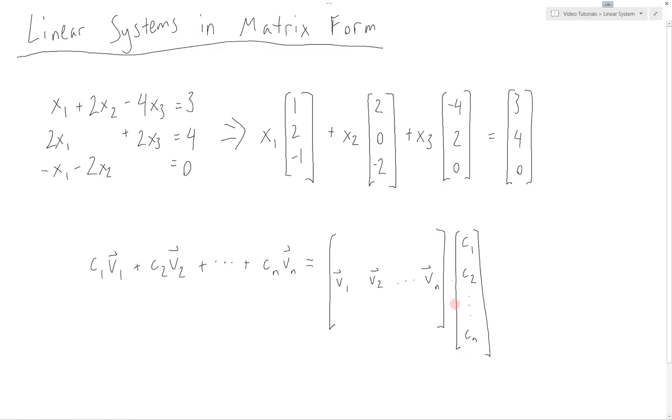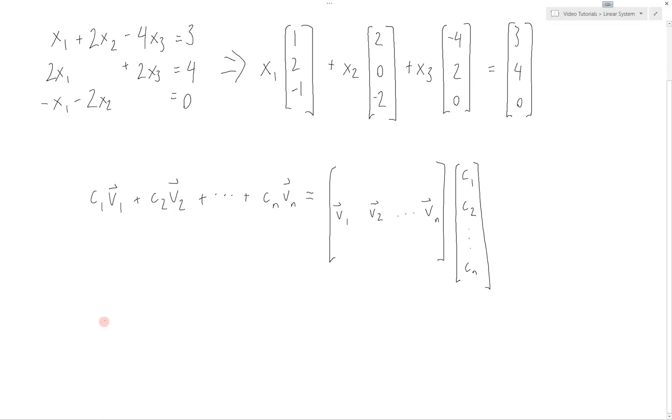So we can see that the system that we have is very similar in form to this. Our v vectors are the coefficients that we used in the equations, and the coefficients here are the variables that we are trying to find. So this can be rewritten as the matrix with columns (1, 2, -1), (2, 0, -2), and (-4, 2, 0).